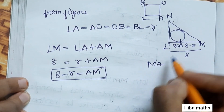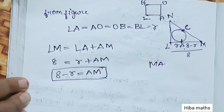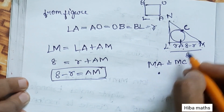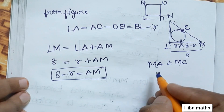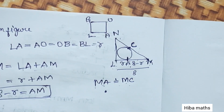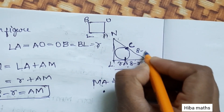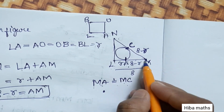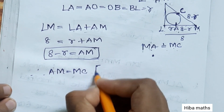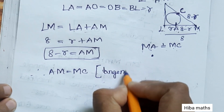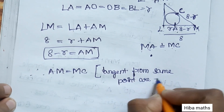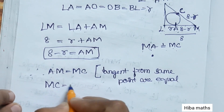Point A is a tangent point. Let's mark point C on side MN. MC is a tangent. Two tangents drawn from the same external point to a circle are equal — tangents from the same point are equal. So MA equals MC, meaning MC is also equal to 8 minus R.